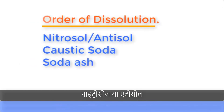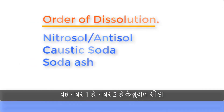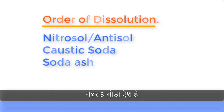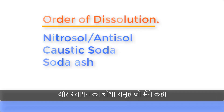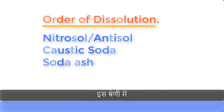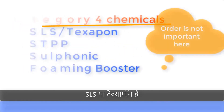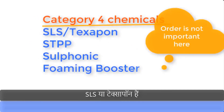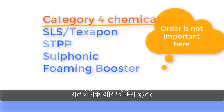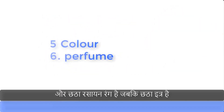The order is: number one, nitrosol or antisol; number two, caustic soda; number three, soda ash. The fourth group — where order is not important — includes SLS or texapone, STPP, sulfonic, and foaming booster. The fifth chemical is color and the sixth is perfume.